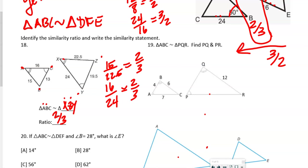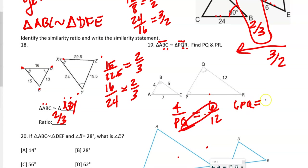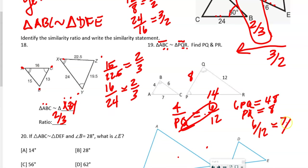The next problem gives us the similarity statement, so PQ maps to AB. Using BC over QR — that's 6 over 12 — and setting 4 over PQ equal to 6 over 12, cross-multiplying gives 6·PQ = 48, so PQ = 8. You can see the pattern: everything multiplies by 2. Then for PR: 6 over 12 equals 7 over PR, cross-multiplying gives 12 times 7 = 84 = 6·PR, so PR = 14.